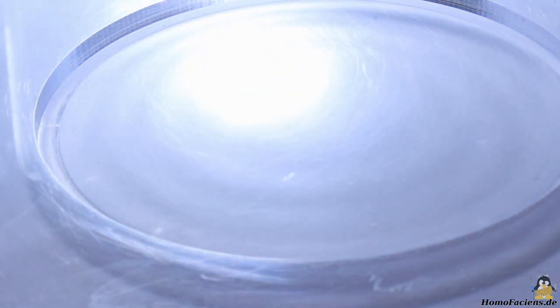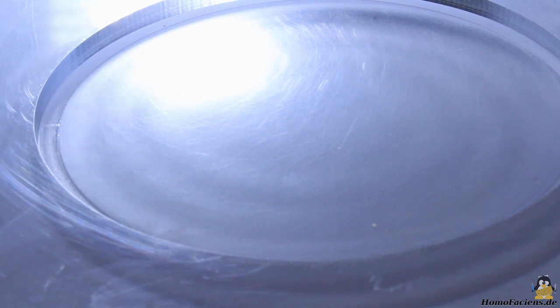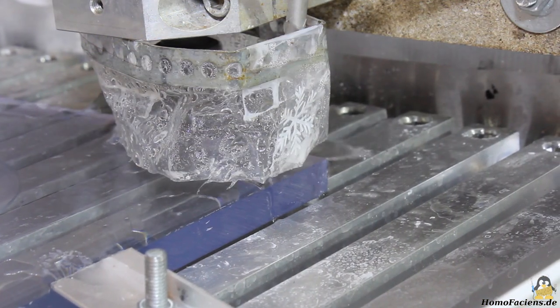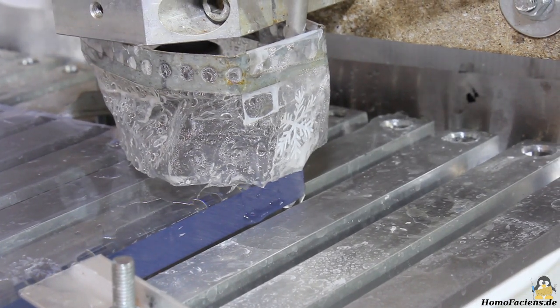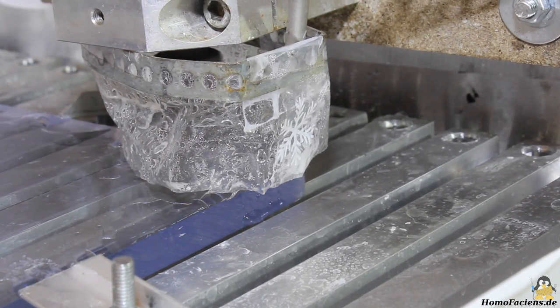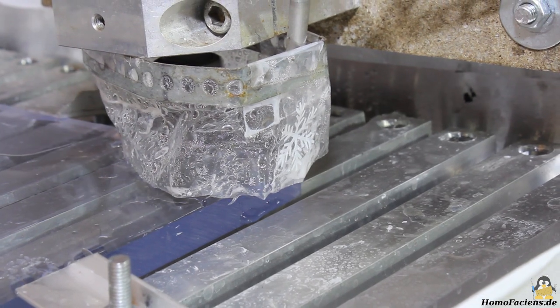During sanding I could feel that there are waved structures on the surface which make the lens useless. The reason for this was a poorly adjusted Z axis. After re-tightening all linear drives I had a second run.